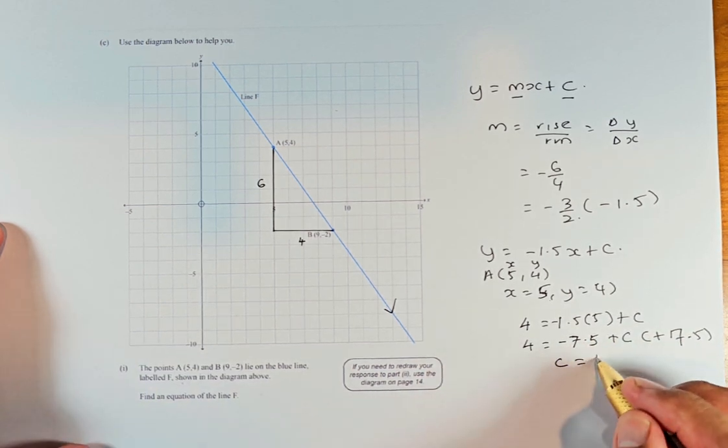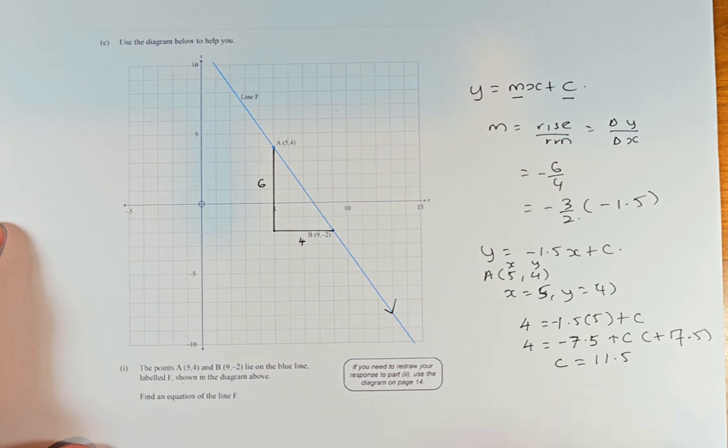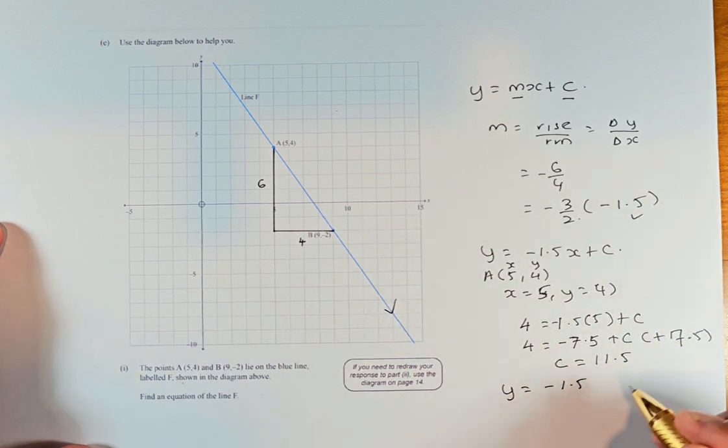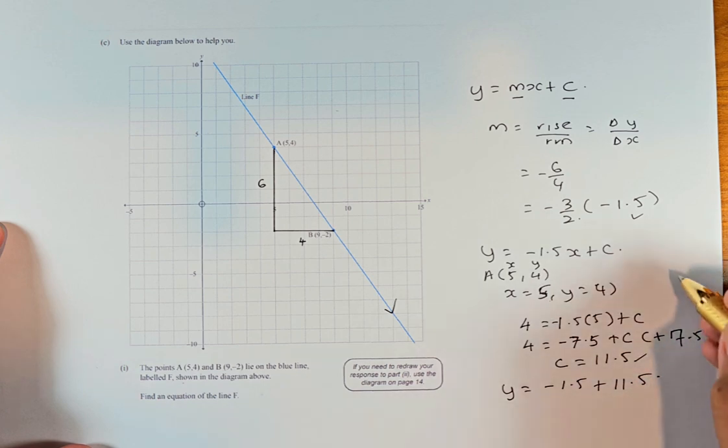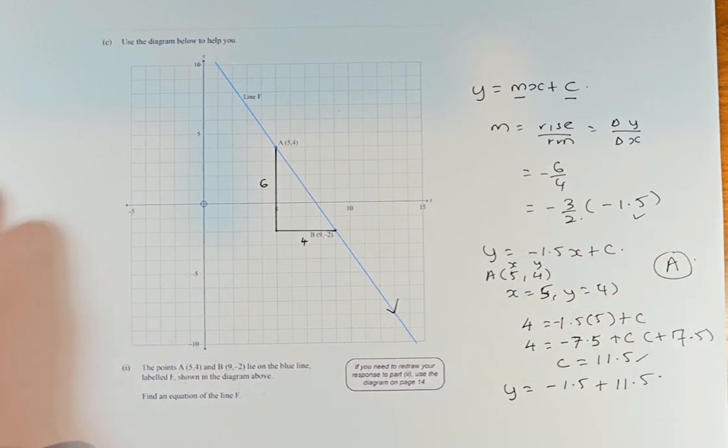4 plus 7.5 is 11.5. So your equation is going to be Y equals MX plus C. Your M was found as minus 1.5, and your C was found as 11.5. So Y equals minus 1.5X plus 11.5, and that is an easy achieve. Watch the last video, which is a merit question, part 2 of the same question. Cheers everyone and have a great day!